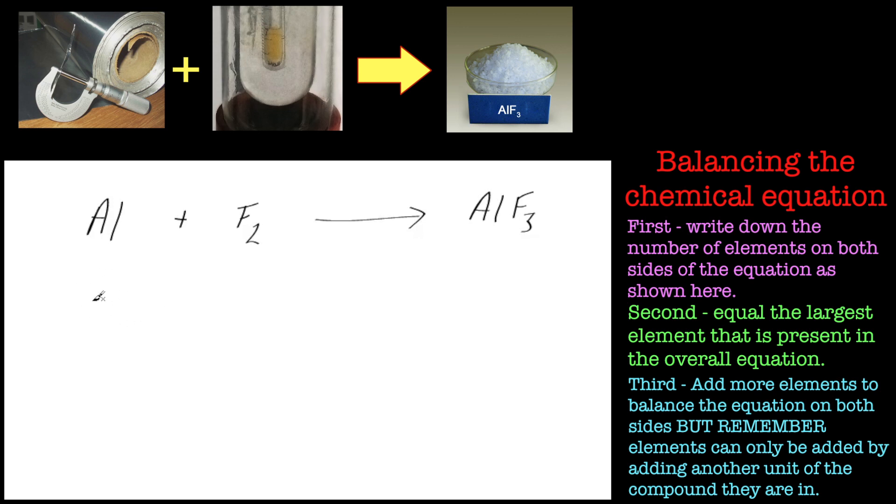We've got aluminum there, one of them, we've got two fluorines, and that goes to give one aluminum again, but this time three fluorines. Okay, so they're clearly not balanced. You've got an excess of fluorines on this side, but only a tiny bit.